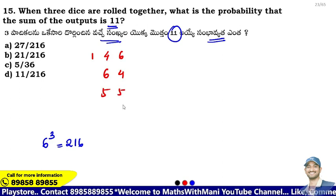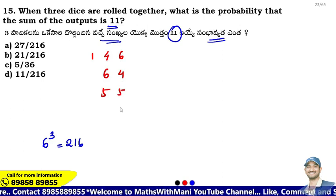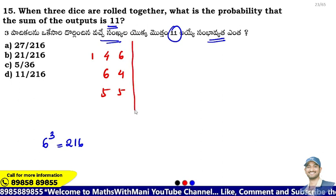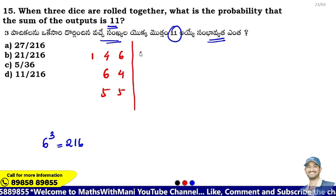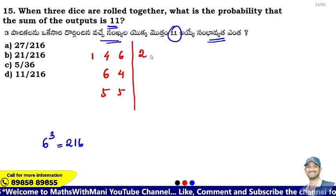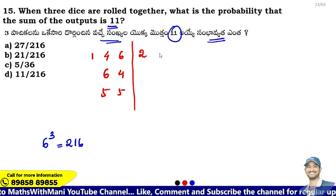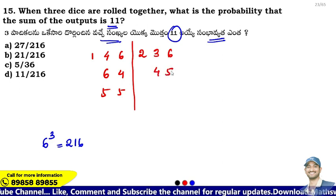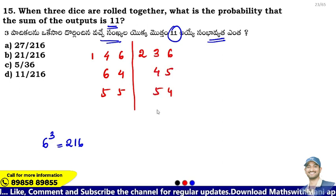Continuing the possibilities for sum 11: combinations include (5,5), (6,5), (5,6), (4,6), (6,4), and others. The number of possibilities is 3, 4, 5, 4, and 3.